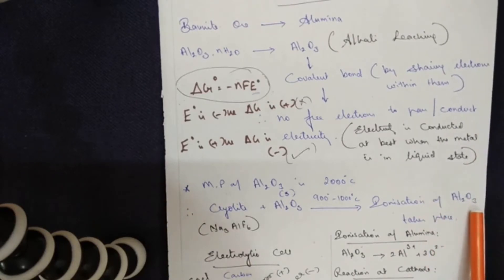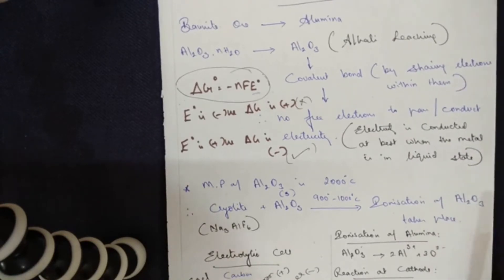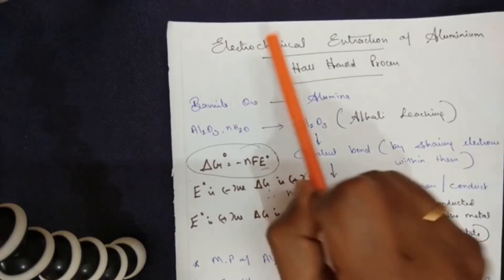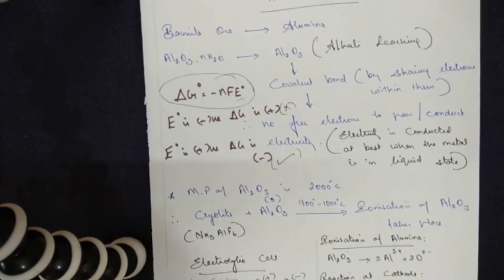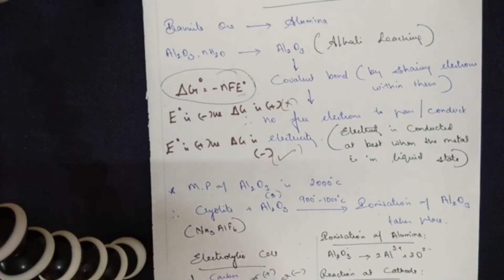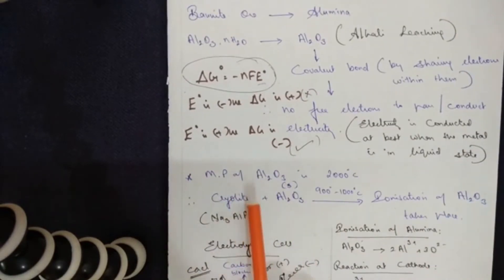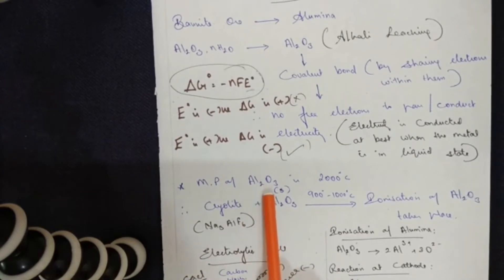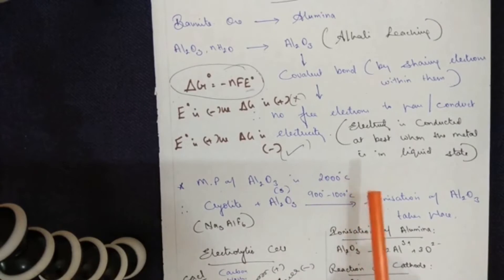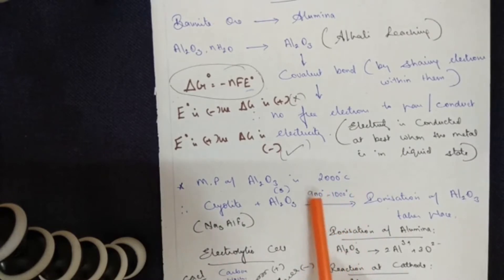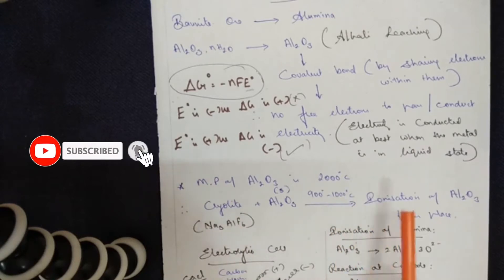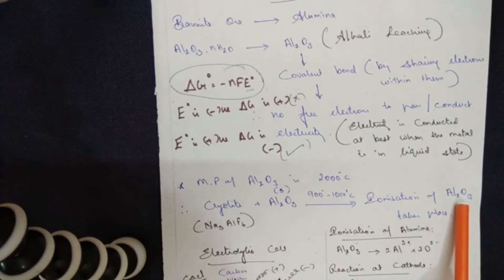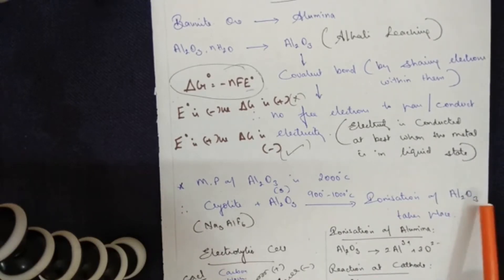Ionization of alumina means those molecules get split into positive ions and negative ions. We are studying an electrochemical method, which involves redox reactions — meaning oxidation and reduction take place simultaneously. To summarize: pure alumina requires 2000°C to melt, but when mixed with molten cryolite, only 900 to 1000°C is required. At this temperature, ionization of alumina in molten cryolite takes place, splitting it into positive and negative ions.